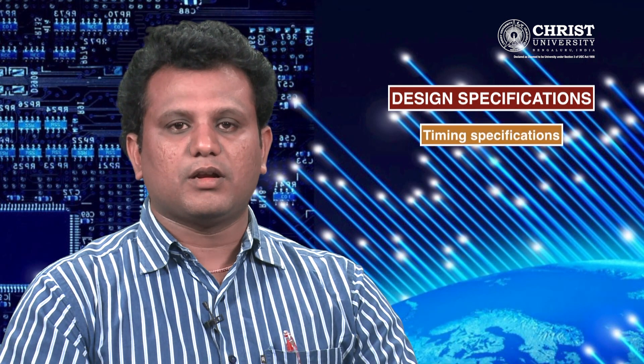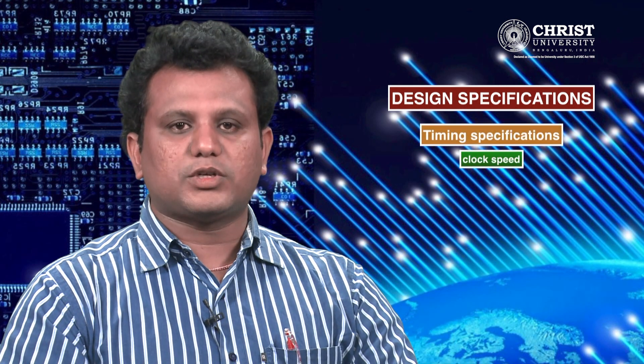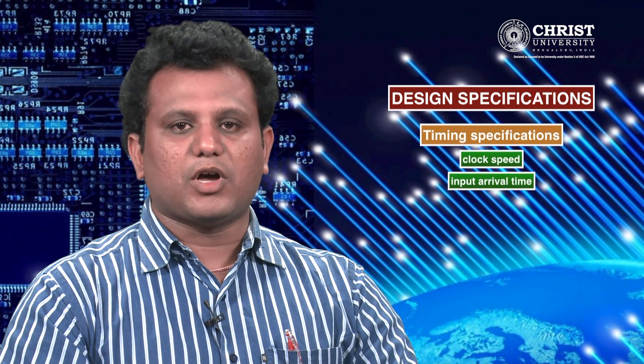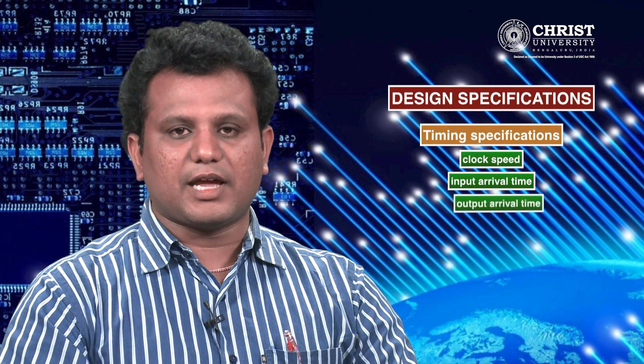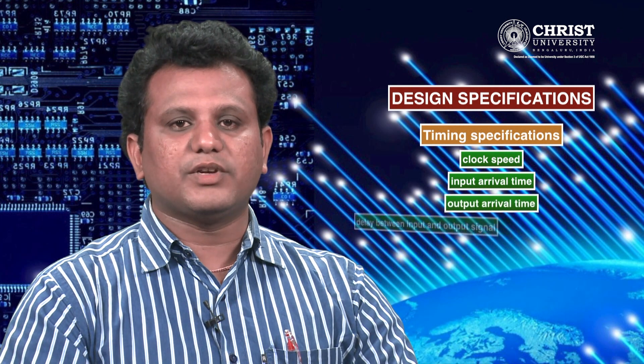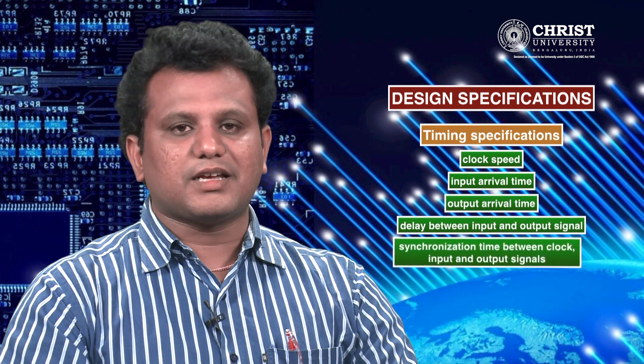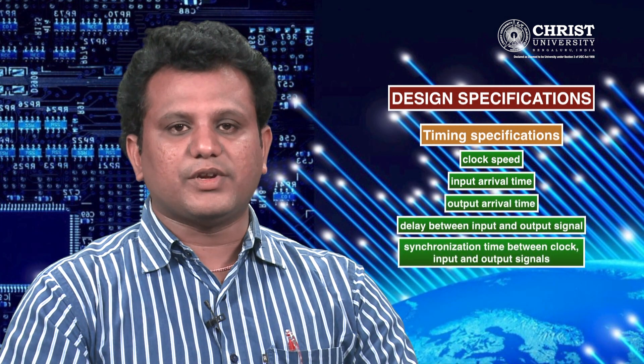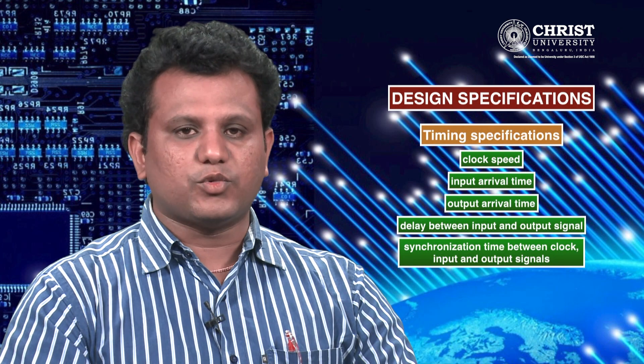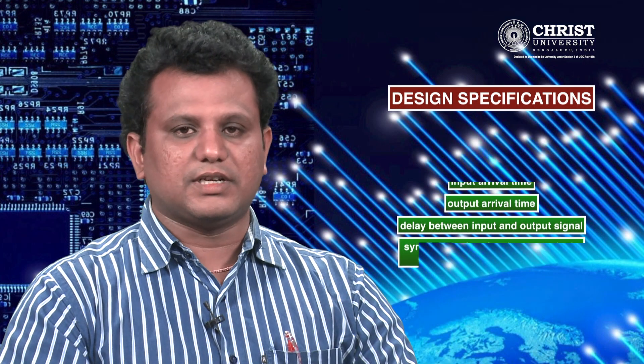Timing specifications of a digital system include clock speed, input arrival time, output arrival time, delay between input and output signals, and synchronization time between clock input and output signals.